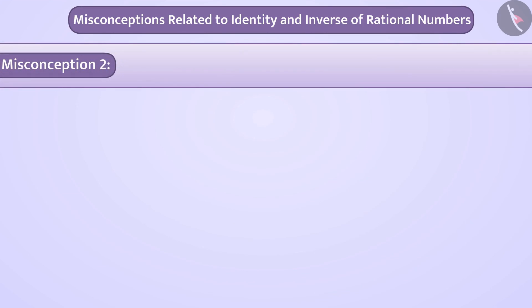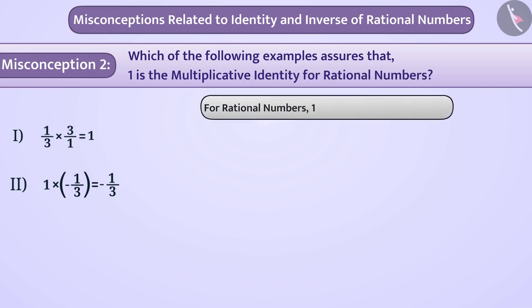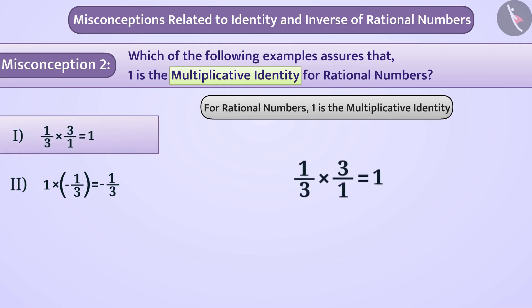Misconception 2: Which of the following examples assures that 1 is the multiplicative identity of rational numbers? For rational numbers, 1 is the multiplicative identity. Many students just memorize the concept without understanding its meaning. By looking at the first option, they think that since multiplication is performed and the answer is 1, this is an example of multiplicative identity. They give option 1 as the answer, which is wrong.